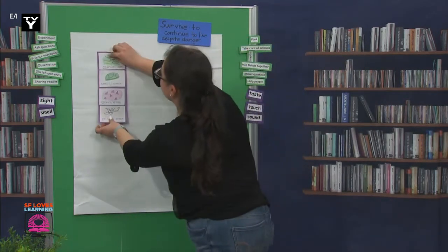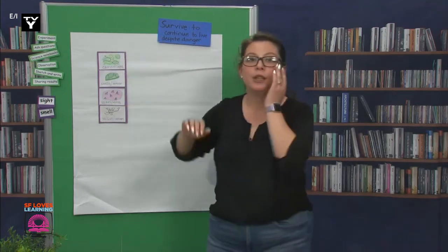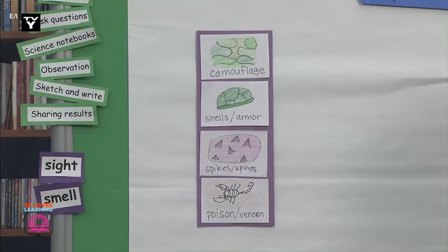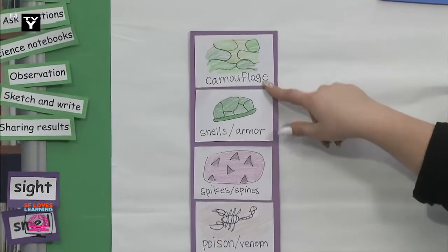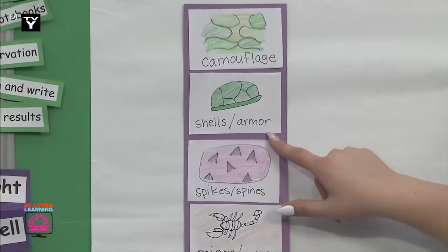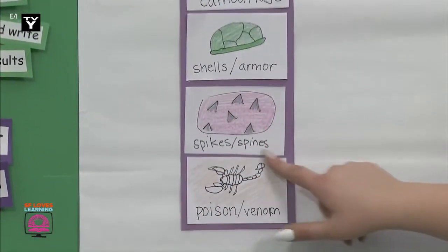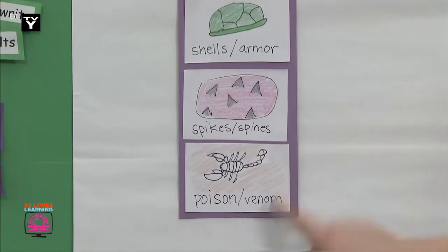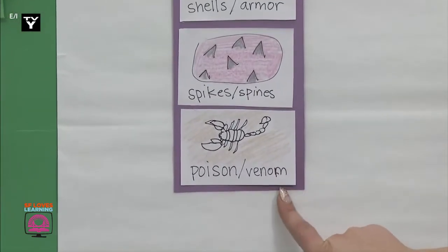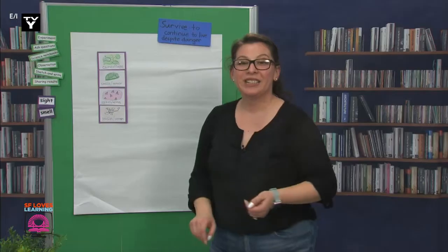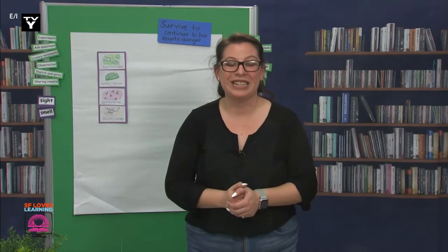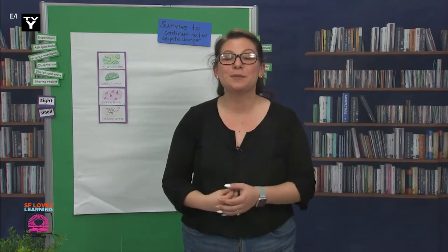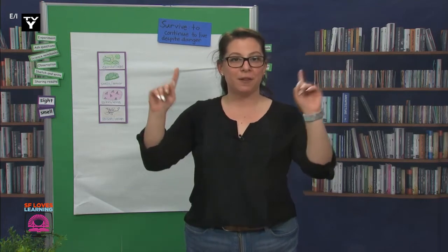I learned about four main defenses that plants and animals can have: camouflage, shells or armor, spikes or spines, and poison or venom. Some of you need to learn what these words mean, and that's a great idea. Let's take some time to understand our new scientific vocabulary.